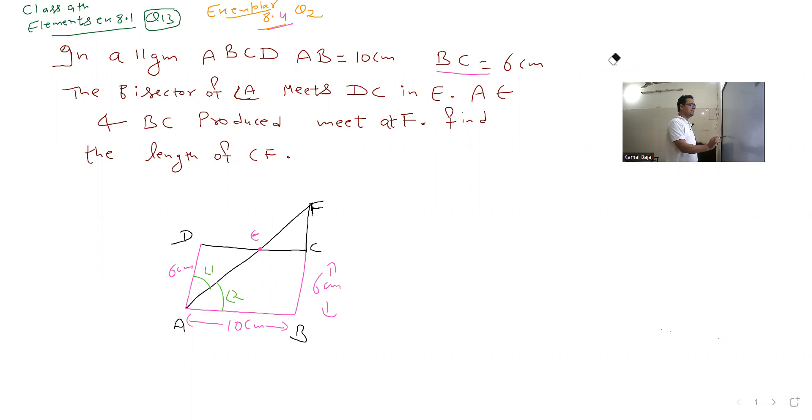If you give AD or BC, it's the same thing because ABCD is a parallelogram, so the opposite sides are equal. In this diagram, the angle A bisector is given, which passes through DC, cuts it at E, and is produced to F. It meets BC produced at F.